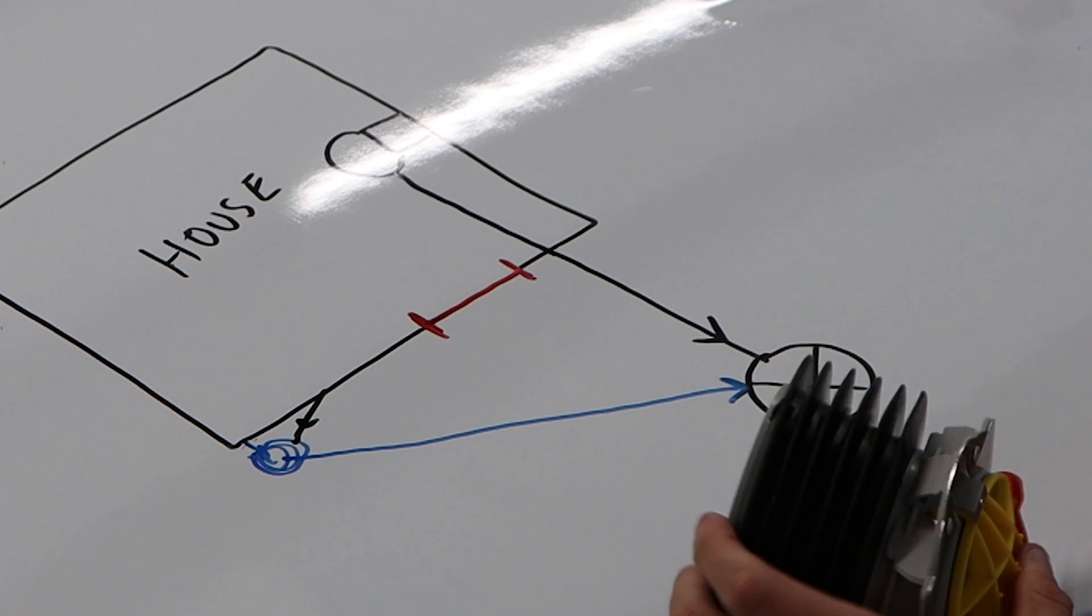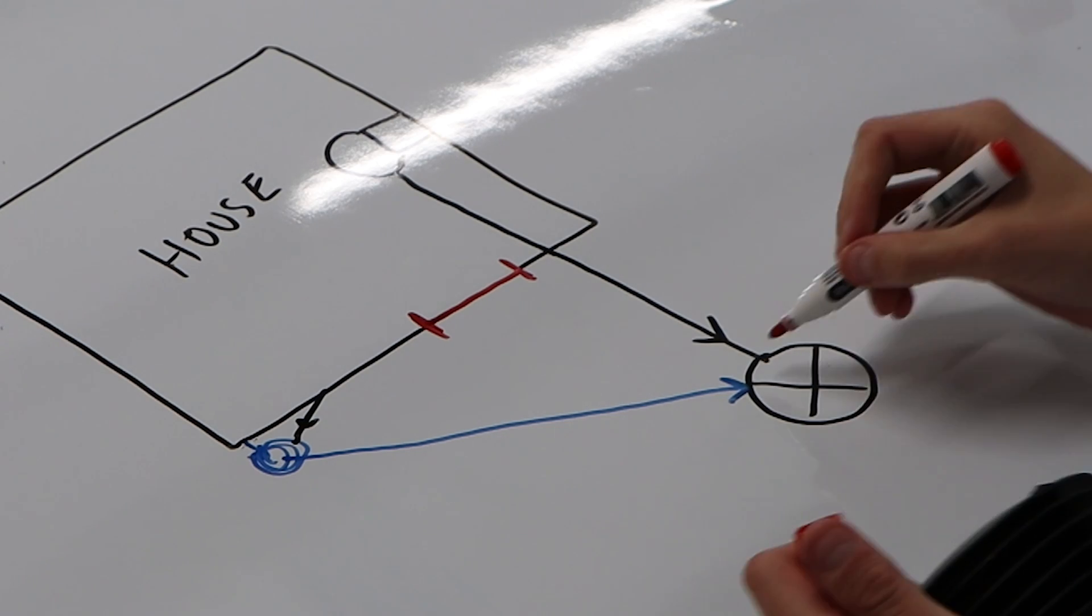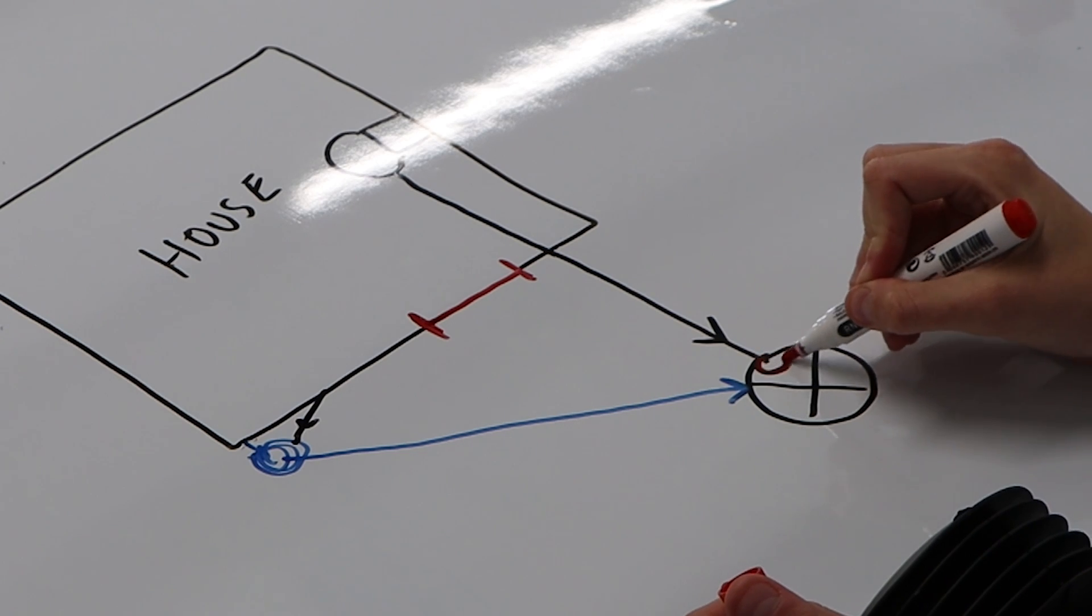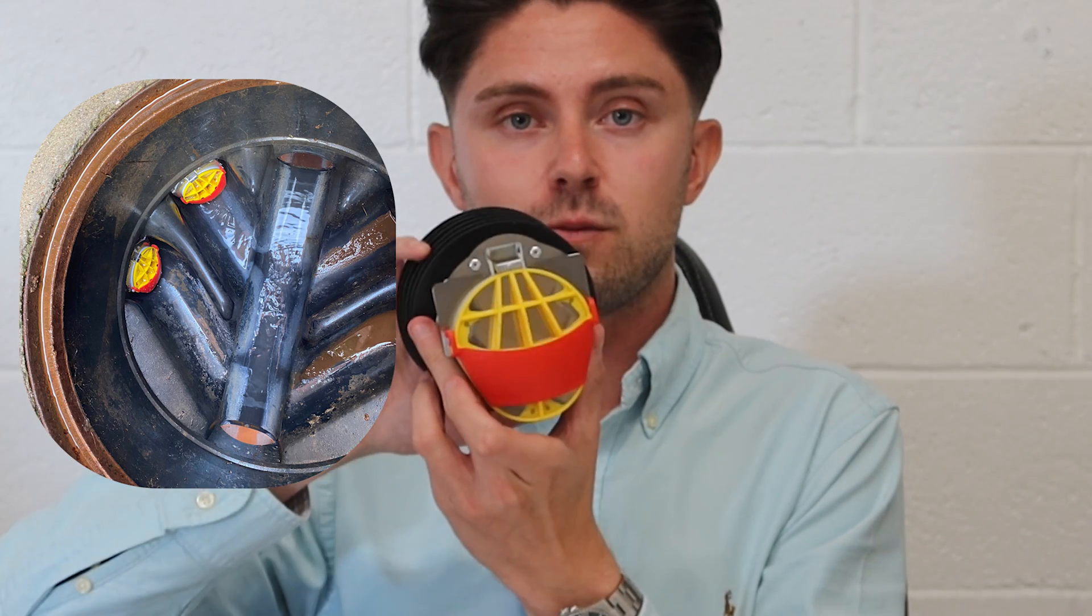Then we would again need to isolate the connection point of where the toilet or the foul waste is coming into the manhole. We could again do that with a push fit non-return valve, slot it in very easy, allows the waste to flow out but not back the other way, and helps defend the property from backflow and becomes part of the property flood mitigation scheme.